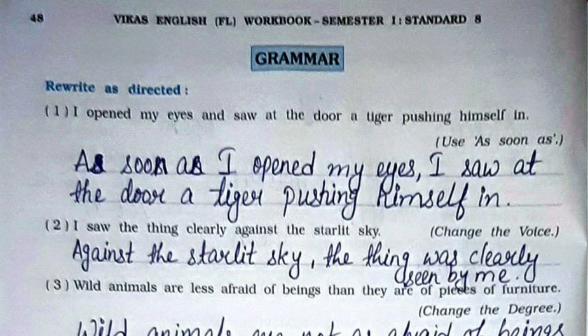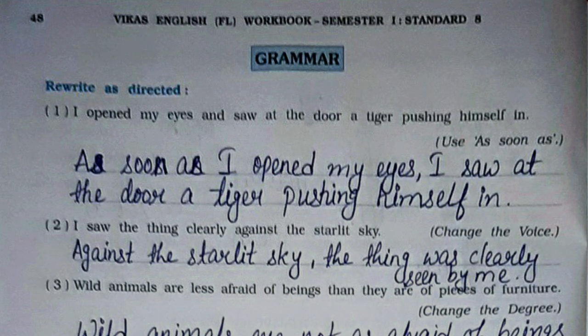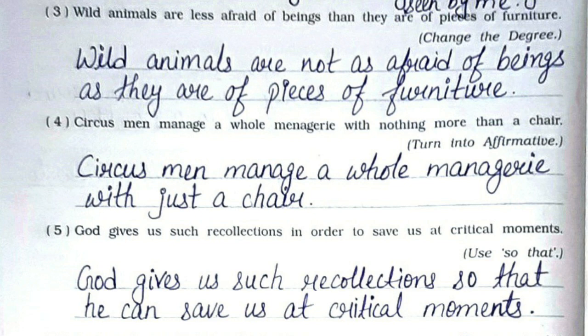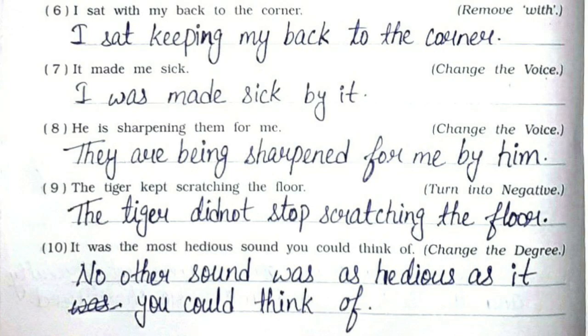Grammar: Rewrite as directed. 1. Use 'as soon as': 'As soon as I opened my eyes, I saw at the door a tiger pushing himself in.' 2. Change the voice: 'Against the starlit sky, the thing was clearly seen by me.' 3. Change the degree: 'Wild animals are not as afraid of beings as they are of pieces of furniture.' 4. Turn into affirmative: 'Circus man manages a whole menagerie with just a chair.' 5. Use 'so that': 'God gives us such recollections so that He can save us at critical moments.'